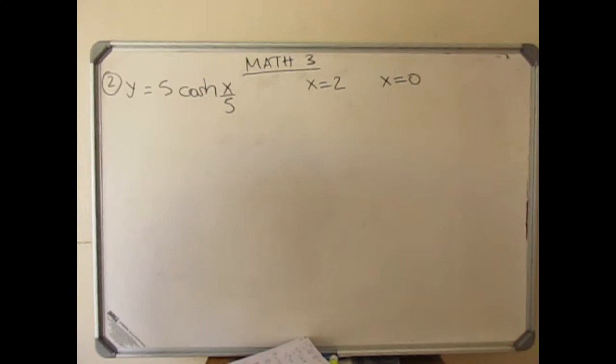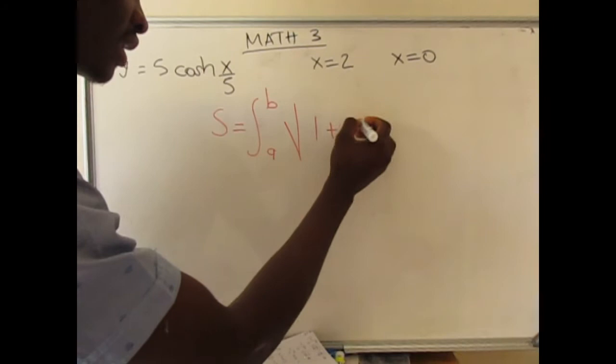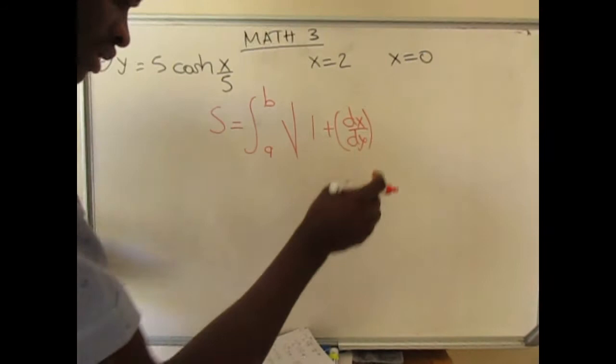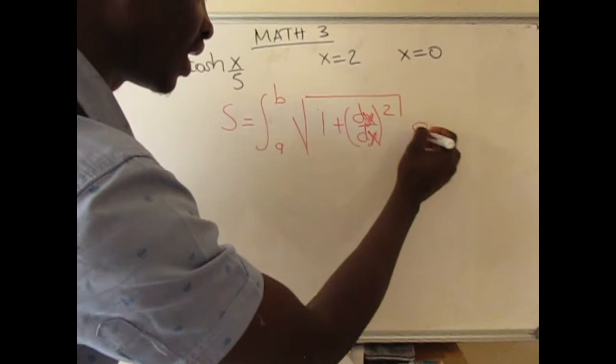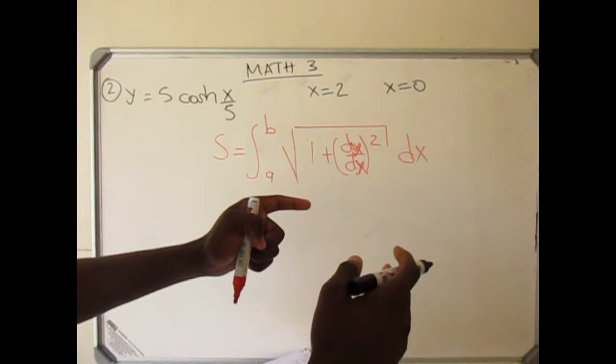Our last example today is going to be in rectangular coordinates. We know our formula for rectangular coordinates is given by the integral from A to B of the square root of 1 + (dy/dx)² dx. So again, we'll try to break it into pieces. Because once you break it into pieces, you don't make any mistakes. The first thing we're going to look for is the derivative dy/dx. Once we get the derivative, we get the power of it — that's our second step — and then after we get it, we put everything together.